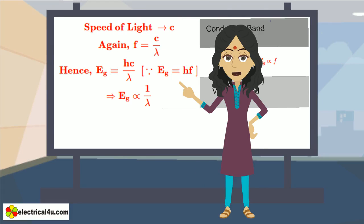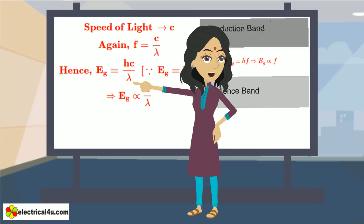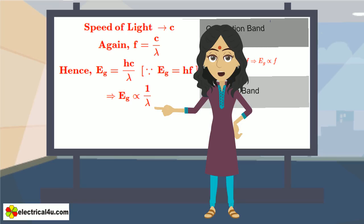Hence, from equation E_G equals H·F, we can write E_G equals H·C by lambda. So we have seen that wavelength of electromagnetic radiation is inversely proportional to the forbidden energy gap.